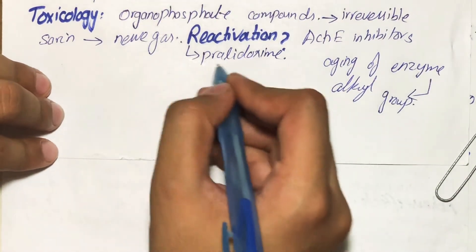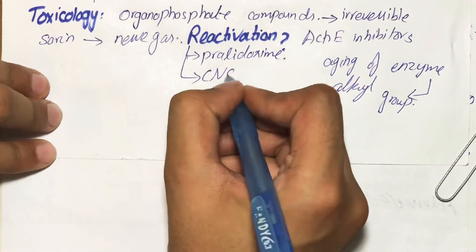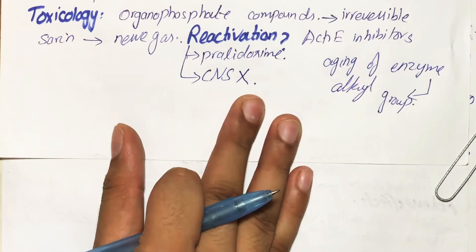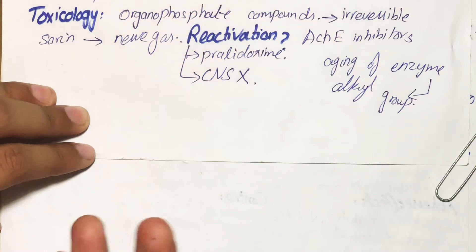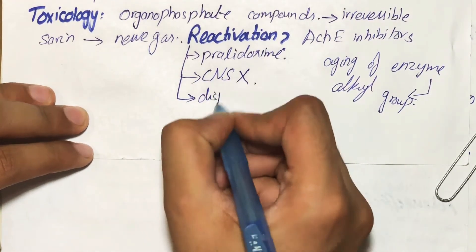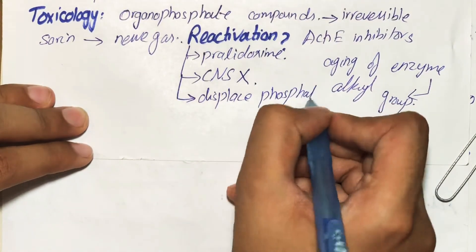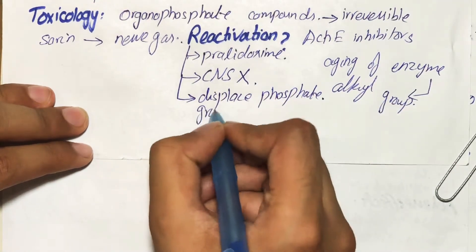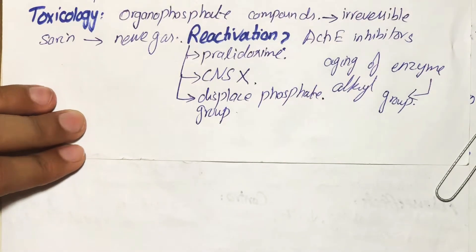One important point is that pralidoxime cannot penetrate the CNS, so it can only reverse peripheral effects and cannot reverse CNS effects. It reactivates the enzyme by displacing the phosphate group present on the organophosphate and regenerating the enzyme in this way.